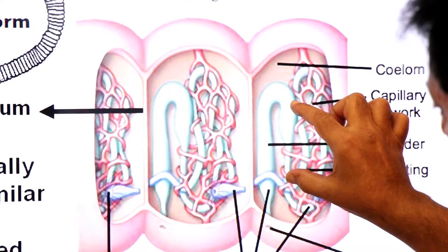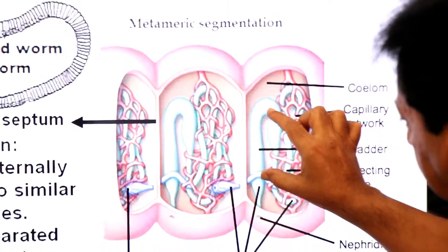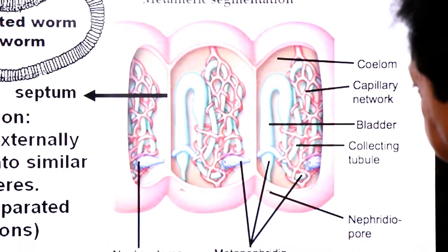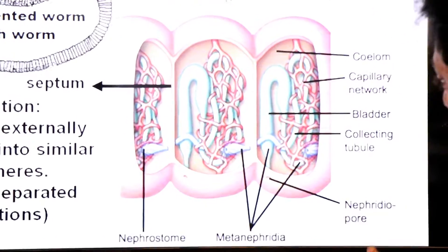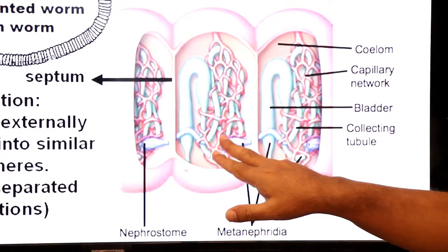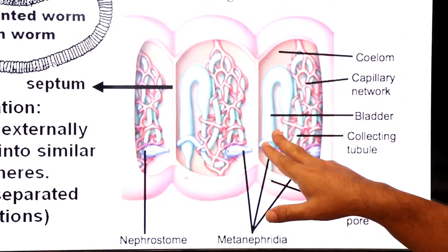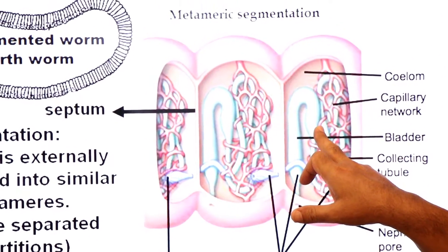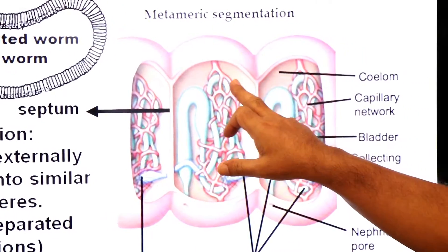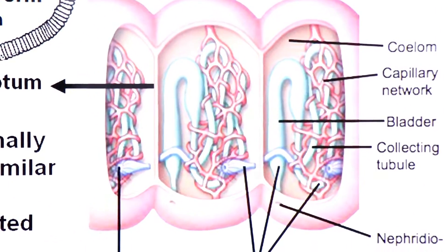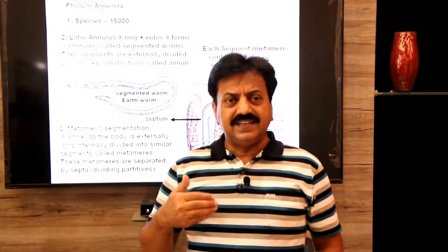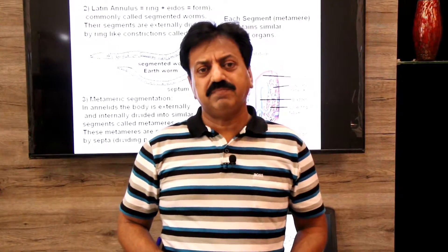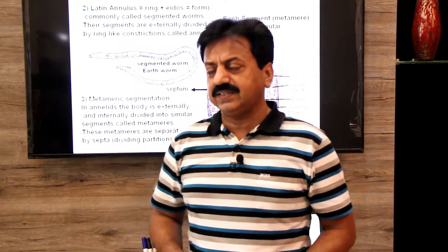These tubular structures are called metanephridia — metanephridia are the excretory organs of annelids. These are the repeating units in the body of annelids called metameres, and such a type of segmentation is called metameric segmentation.